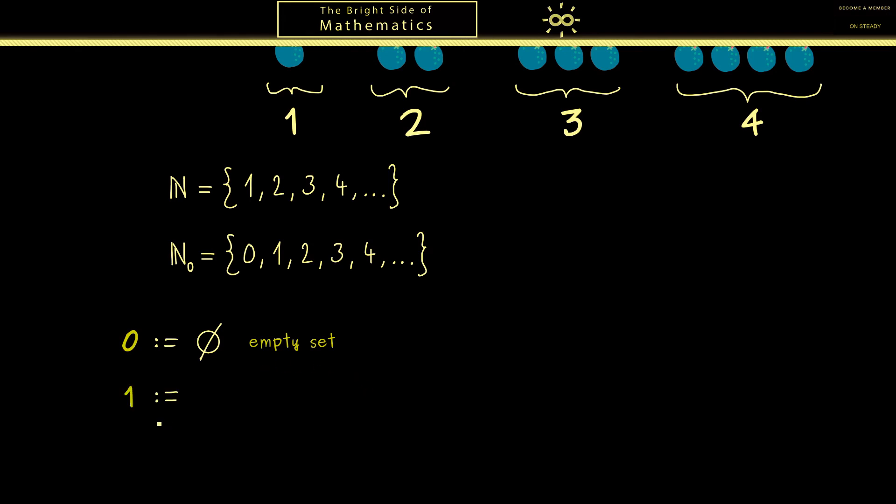Now for the next step for defining the number 1 as a set we need a new set that contains only one element. We could take any element we want but the only thing that is defined yet is the empty set. So we put 0 inside the set brackets and we get out a new set.